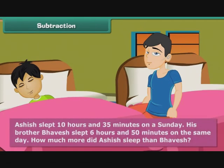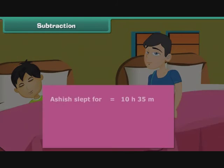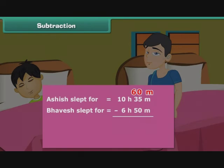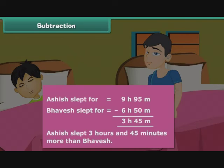Subtraction: Ashish slept 10 hours and 35 minutes on a Sunday. His brother Bhavesh slept 6 hours and 50 minutes on the same day. How much more did Ashish sleep than Bhavesh? We cannot subtract 50 from 35, so we borrow an hour. We add 60 minutes and subtract 1 from hours. After performing the subtraction, Ashish slept 3 hours and 45 minutes more than Bhavesh.